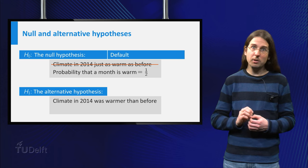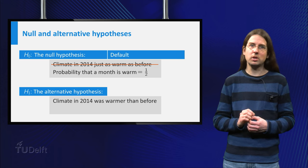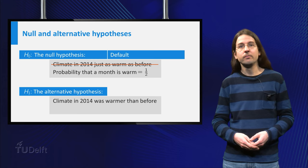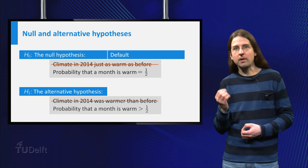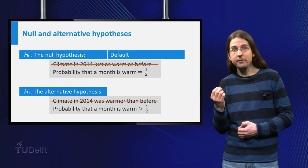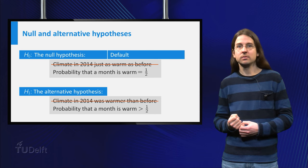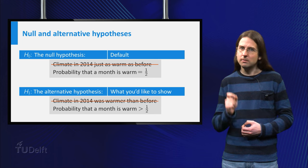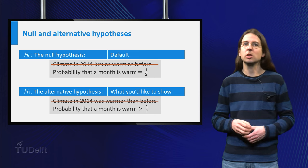The null hypothesis should always correspond to a default: nothing special is happening here. The alternative hypothesis H1 is the statement that the probability of a warm month is more than one half. If we can conclude that H1 is true, then we truly have shown something remarkable.